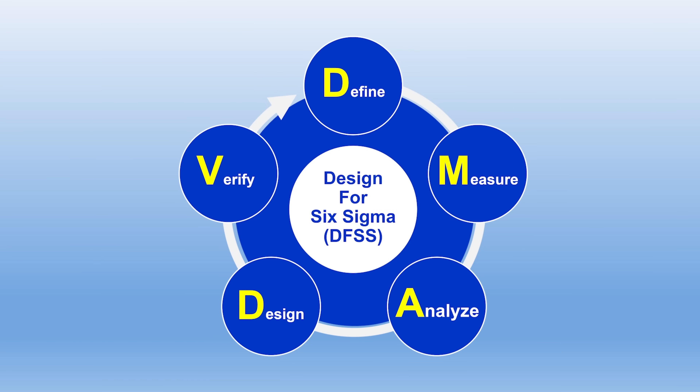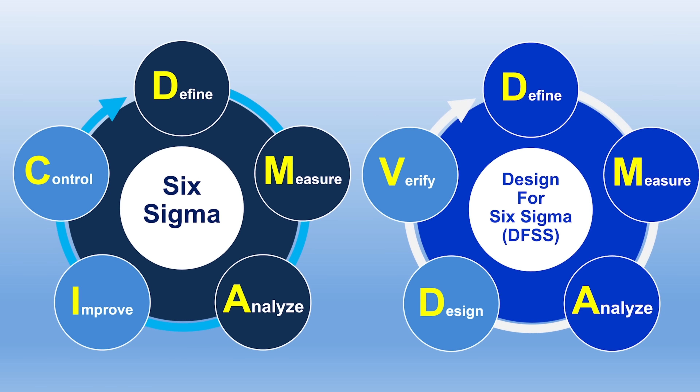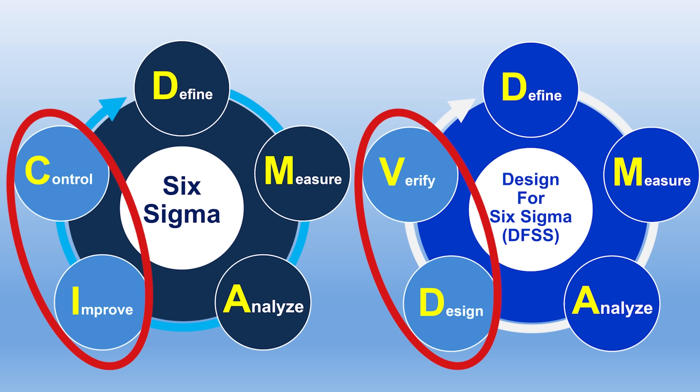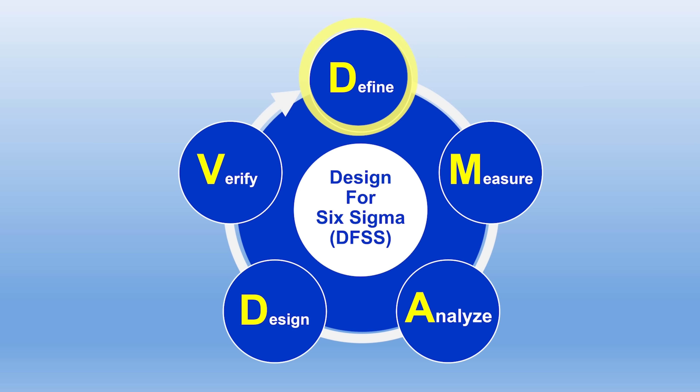There's another thing to mention about Six Sigma: there's a secondary methodology called DMADV. We just talked about DMAIC — Define, Measure, Analyze, Improve, Control. The secondary methodology, DMADV, is specifically used for new products and is called Design for Six Sigma. The only difference is the last two steps: instead of Improve and Control, you have Design and Verify. So DMADV stands for Define, Measure, Analyze, Design, and Verify. If you're developing a new product, you don't want to use DMAIC — you want to use DMADV.